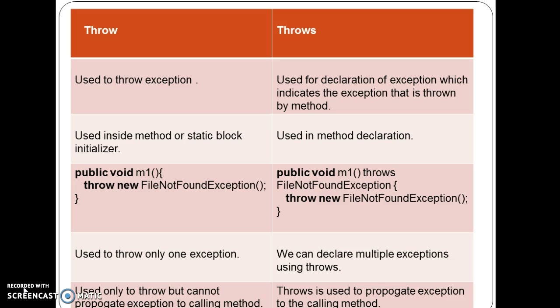One of the main differences in usage: throw is used inside a method or a static block initializer, while throws is used only in the method declaration. That means when we declare throws in a method signature, it indicates the method is capable of throwing that exception.